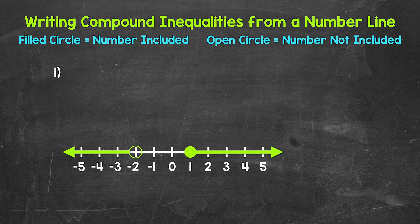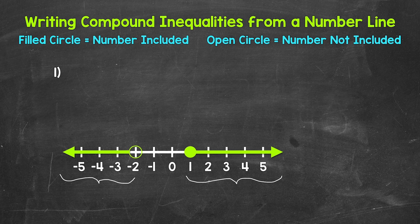We can clearly see we have two inequalities here — we have this inequality or this inequality. Taking a look at the inequality on the left, we have an open circle at negative two, so negative two is not included. Then the arrow is going left, so that's representing everything less than negative two.